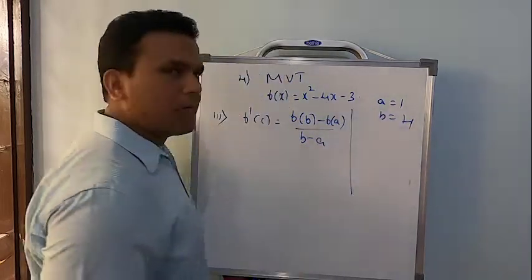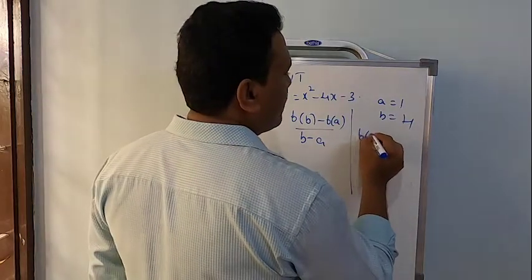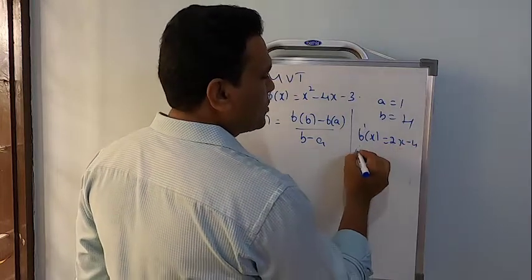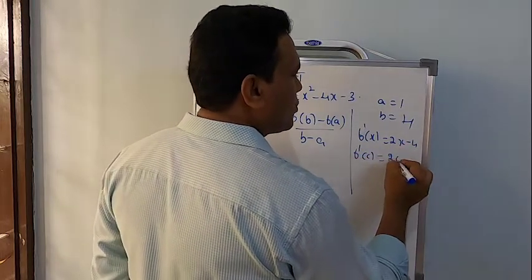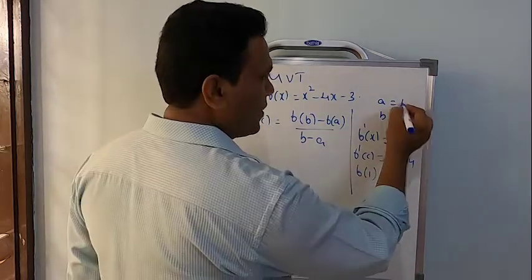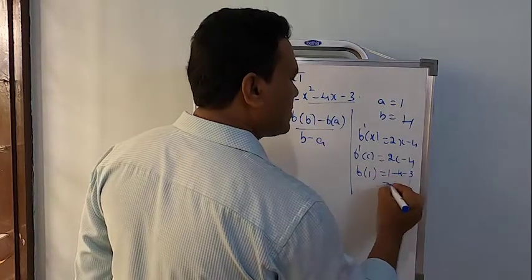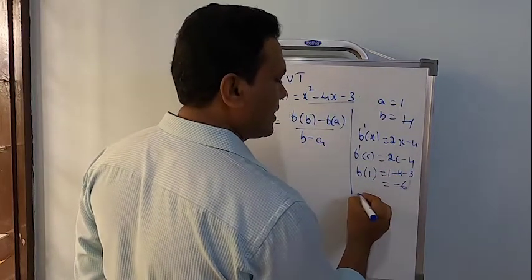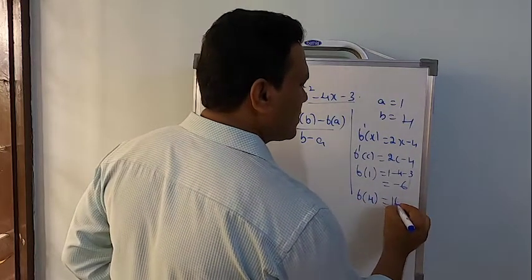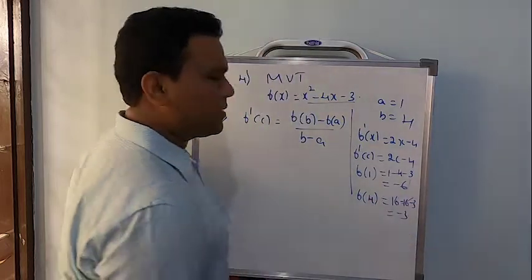According to the mean value theorem, the third condition is: f dash of c should be equal to f(b) minus f(a) by b minus a. I suggest you practice solving separately first. So here, f dash of x will be 2x − 4, therefore f dash of c will be 2c − 4. I need to find f(a) and f(b). f(1) = 1 − 4 − 3 = −6, and f(4) = 16 − 16 − 3 = −3.